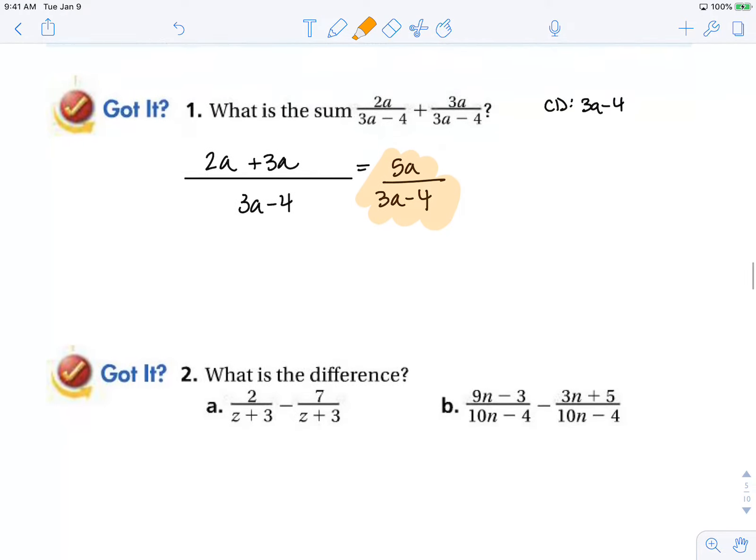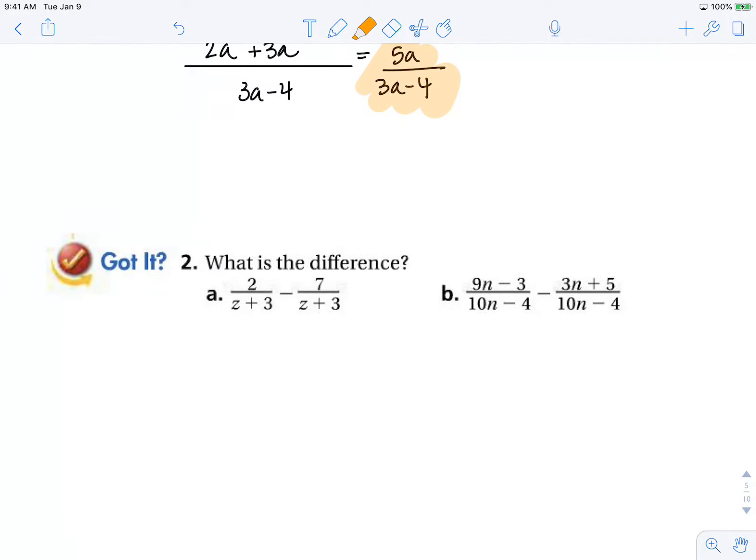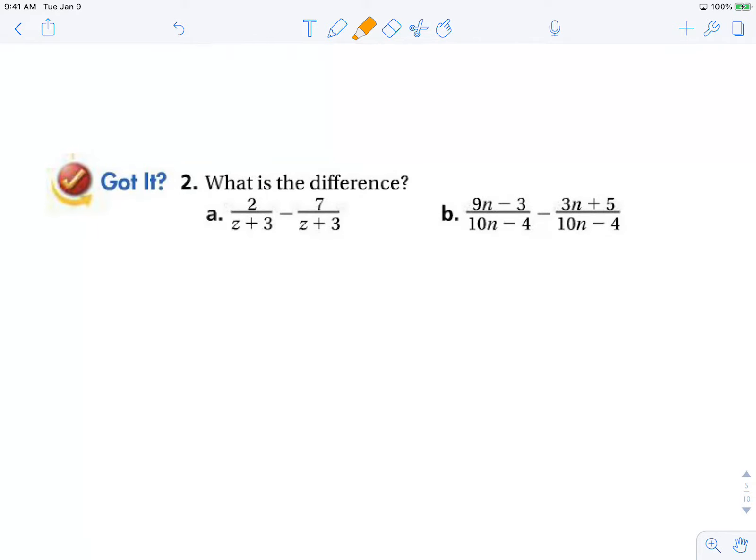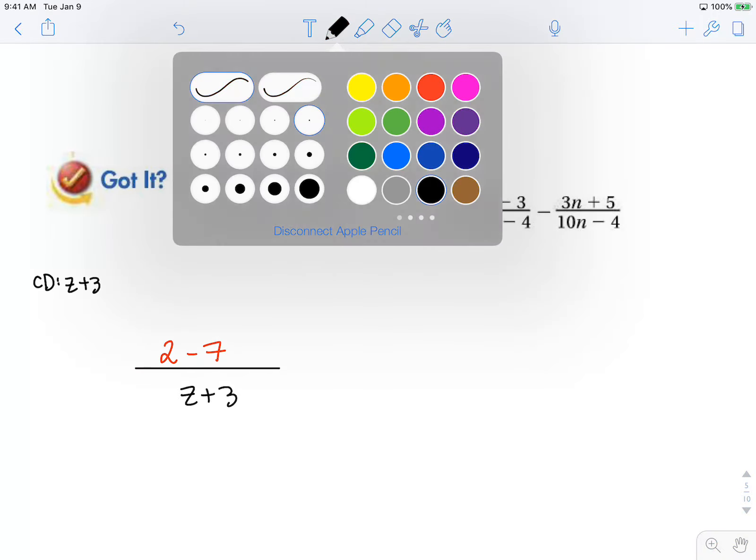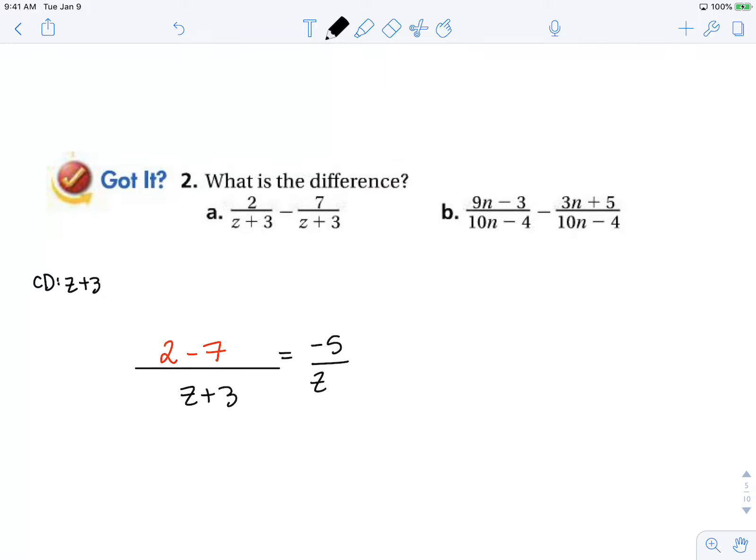Moving along to number 2, same idea but now it's difference. Here we already see there's a common denominator of z plus 3, so we know our final answer is going to be over z plus 3. And now we can combine our numerators: 2 minus 7, so that is going to equal negative 5 over z plus 3.